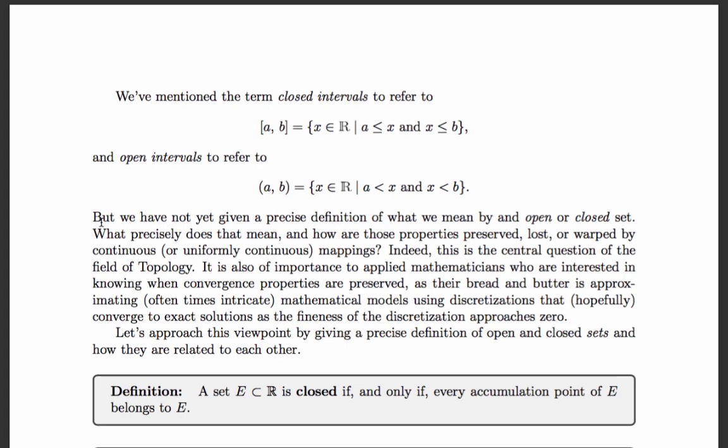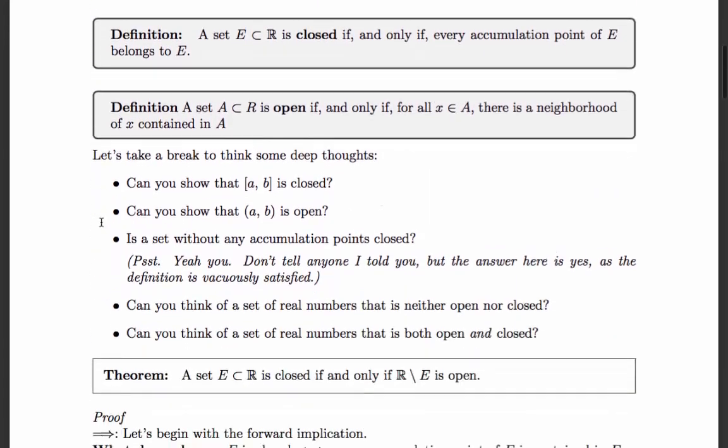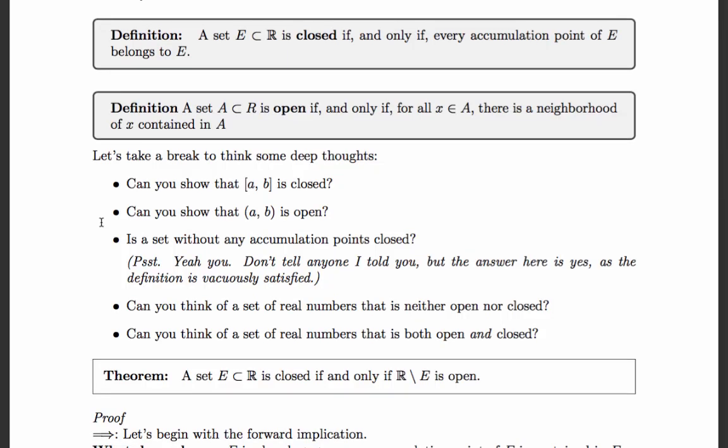A subset of the reals is closed if and only if every accumulation point of the set belongs to that set — the set contains all of its accumulation points. A set is open if and only if for every entry of the set, there is a neighborhood of that entry also contained in the set.